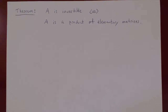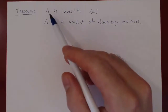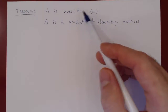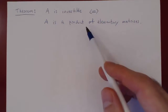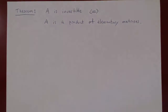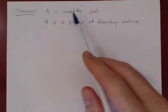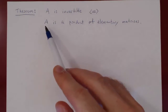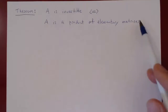Here's the theorem, and this will complete a discussion of elementary matrices. A square matrix A is invertible if and only if A is a product of elementary matrices. Elementary matrices are the building blocks of invertible matrices, just like prime numbers are the building blocks of integers. So a matrix is invertible only if it can be expressed as a product of elementary matrices.